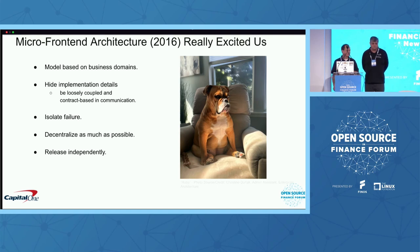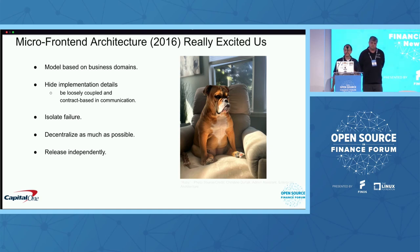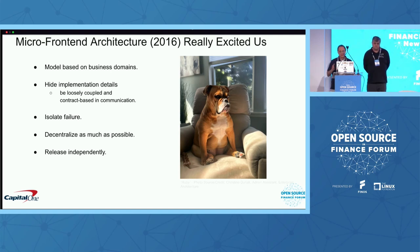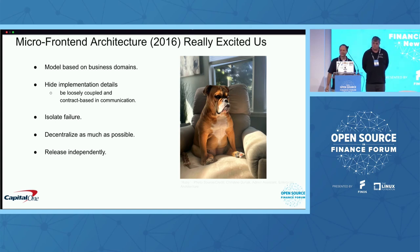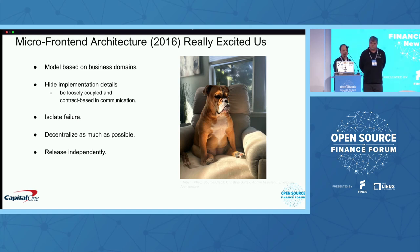This really seemed to align with the experience we were having at Capital One. We realized that if you could achieve this, we would model based on our business domains. We could begin to hide implementation details. One of the things about the monolith is that whether we wanted it to or not, we had broken down contract and interface boundaries, and code was slowly merging together. So we could be loosely coupled and contract-based in our communications, and isolate failure — we didn't like the idea of one piece going down taking everything down.